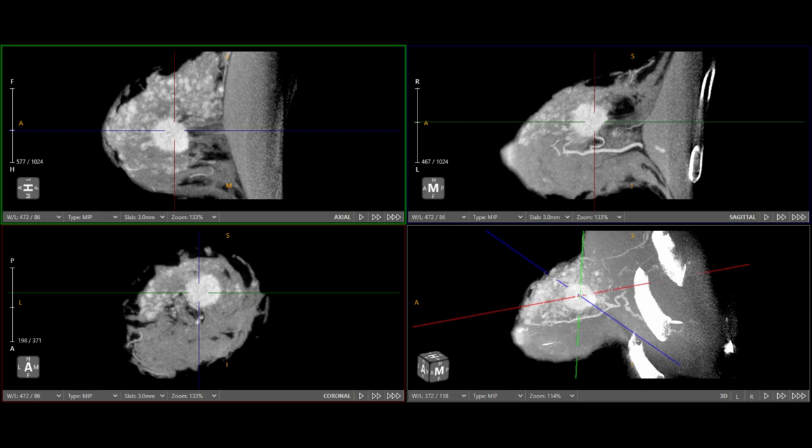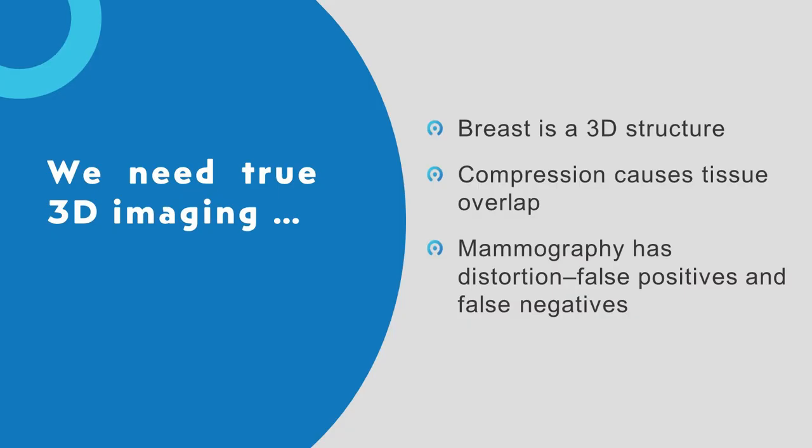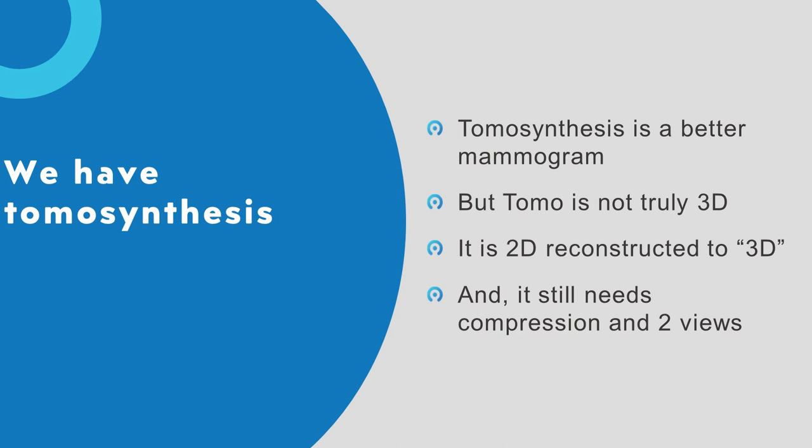Moving on — true 3D. The breast is a 3D structure, and compression makes it into a 2D. Tomosynthesis is not really 3D — it's a reconstruction into 3D, a pseudo 3D, so it can't have perfect resolution in all planes. From the technical point of view, tomo is 2D reconstructed to 3D. It still has compression and two views per side. But no question, it's a better mammogram.